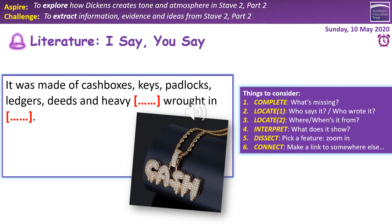Last quotation: 'It was made of cash boxes, keys, padlocks, ledgers, deeds, and heavy purses wrought in steel.' Who says it? It's narration describing Marley near the end of Stave 1. What does it show? The key aspects of his chain — created out of his sinful acquisition of money, his lack of sympathy for others, the sense of control and ownership. A feature: the symbolic aspect of the chain — it represents his sinful misdeeds. A link: the reference to Scrooge being 'as light as a feather' in Stave 5, where he's been relieved of the burden of his sins — quite a neat contrast.